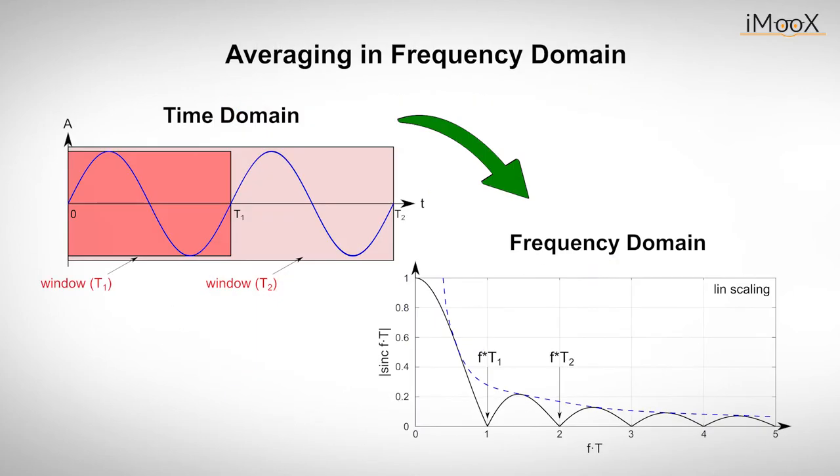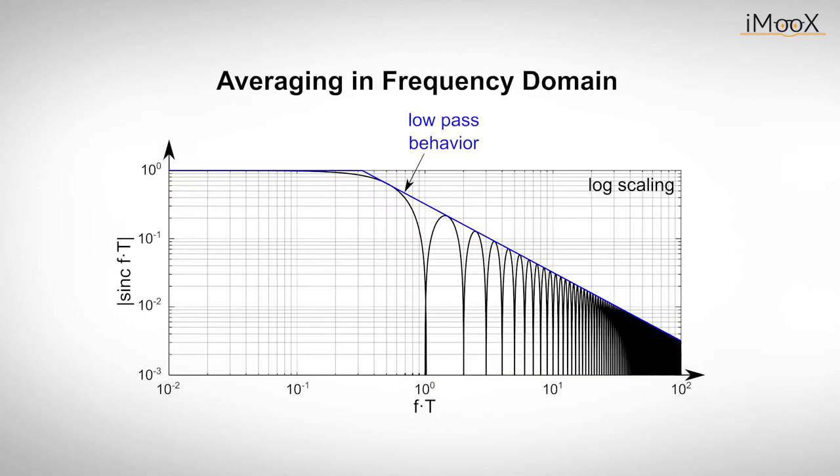If we want to know what the averaging process does with an arbitrary signal with different frequency components, we can also look at its attenuation in the frequency domain, where we can see the signal frequency on the x-axis and the attenuation of the signal on the y-axis. If we plot the same diagram with logarithmic scaling, you might see a similarity to something we have already seen in one of our last videos about analog filters. We see that the envelope shows a low pass behavior. Of course there are some differences between a real low pass filter and an integrator.